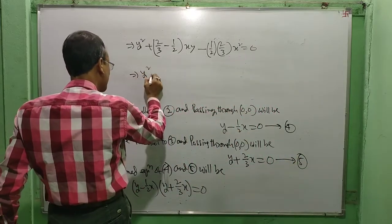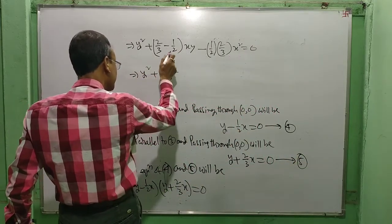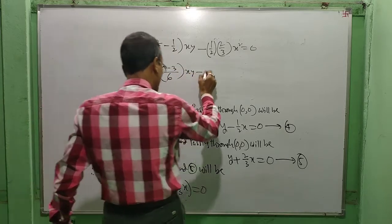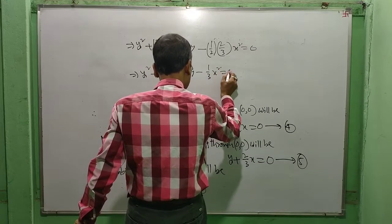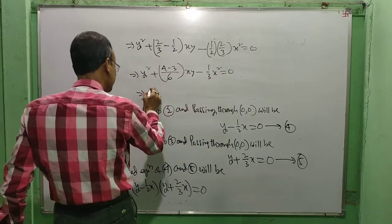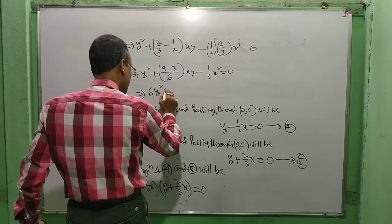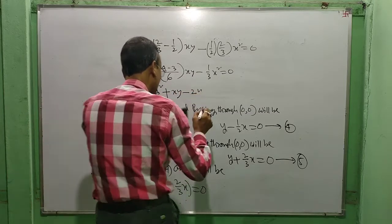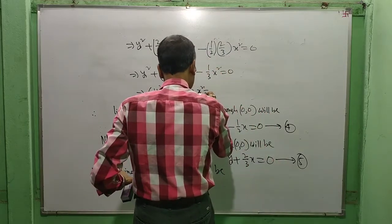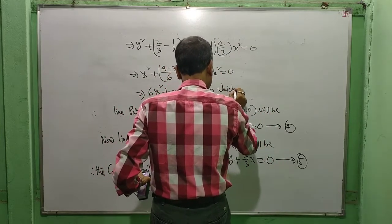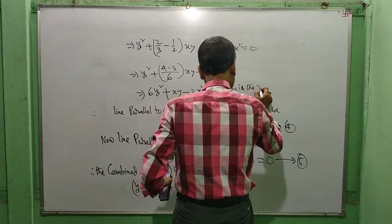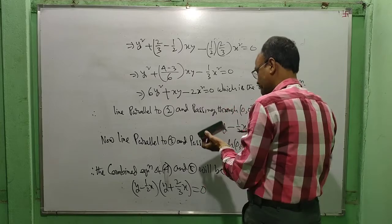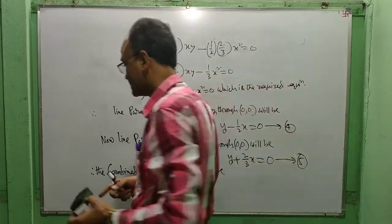This means y² + (4/6 − 3/6)xy − (1/3)x² = 0, which gives y² + (1/6)xy − (1/3)x² = 0. Multiplying through by 6: 6y² + xy − 2x² = 0. This is the required equation.